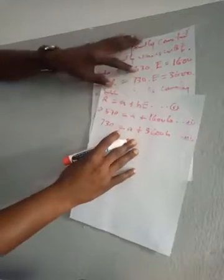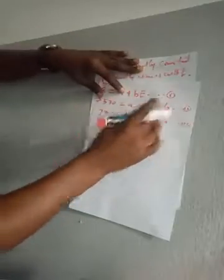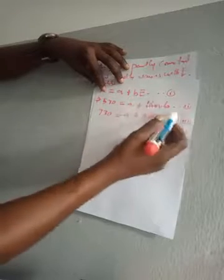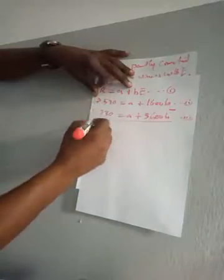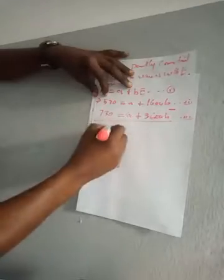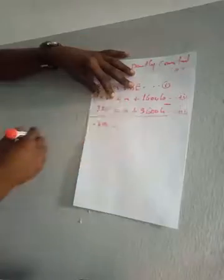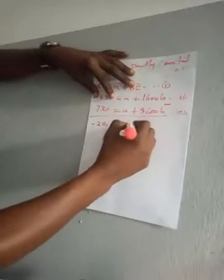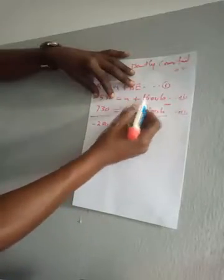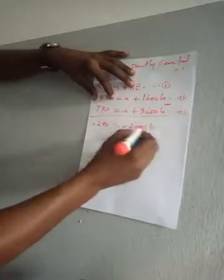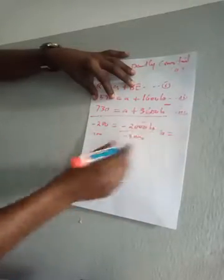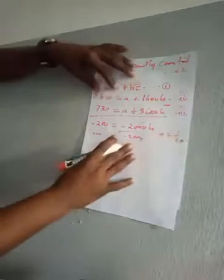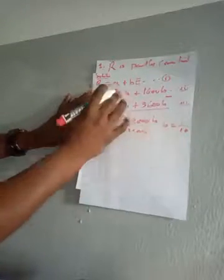Now we have simultaneous equations to solve for a and b, which are the constants. We eliminate a first by subtracting equation 3 from equation 2. Subtracting gives minus 200 equals minus 2000b. Dividing both sides by minus 2000, it implies that b is equal to 1 over 10.